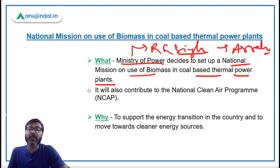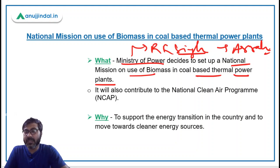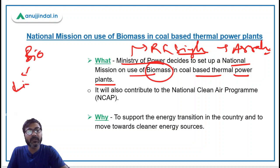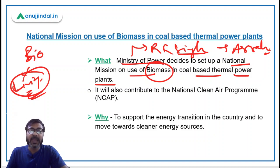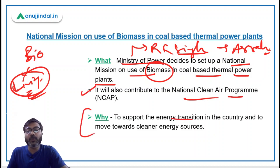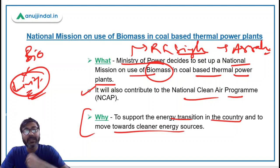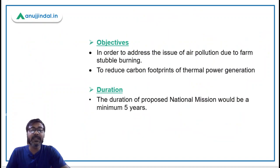In coal-based thermal power plants, biomass will be used after the launch of this mission. Biomass — 'bio' means living — refers to organic matter. This organic matter will be used in coal-based thermal power plants to reduce air pollution, and it will contribute to the National Clean Air Program. The objective is to support the energy transition in the country and move towards cleaner energy sources.